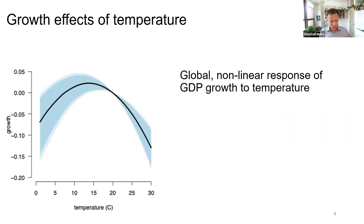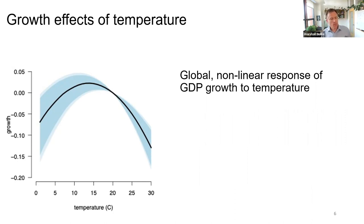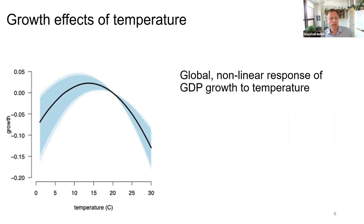And that is indeed what we see. This is the global nonlinear response of GDP growth to temperature. At cold average temperatures, it's upward sloping. Very cold countries tend to benefit; most countries are around the peak or in the tropics to the right of it, and most of the world begins to be harmed as you slowly warm them up.